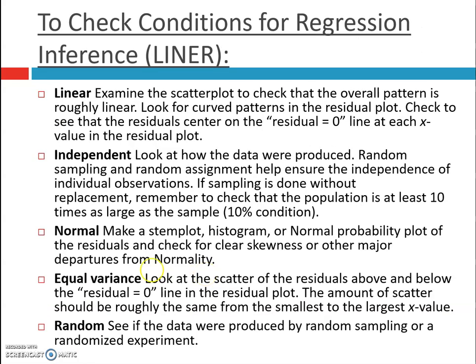Now, I want us to take a look at our conditions. There are quite a few. Before, we usually had three. We always looked at random, normal, and independent. For chi-square test, it was random, independent, and then large counts. When we're checking conditions for regression, we're going to use the acronym LINER to help us remember. So independent is still there, normal is still there, random is still there. Linear and equal variance are the new ones.